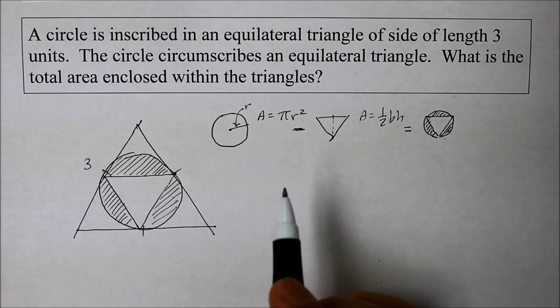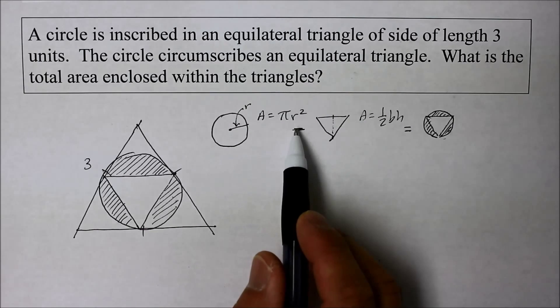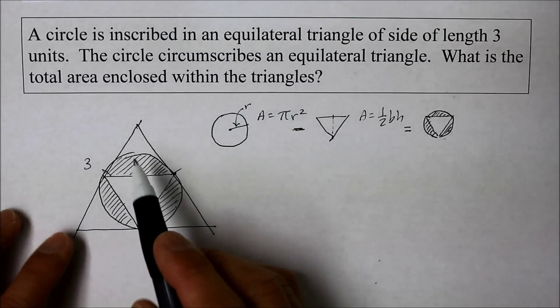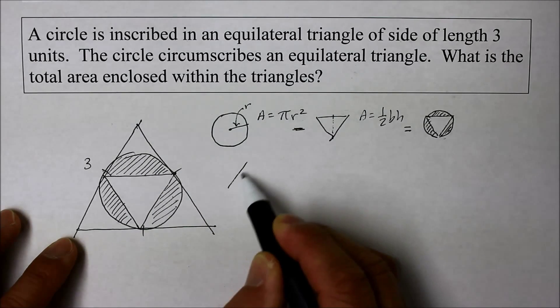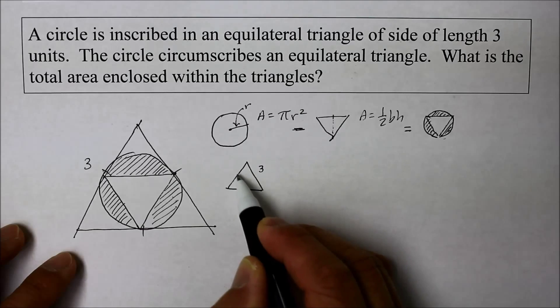All right, then. Let's start looking for the area of a circle and look for the radius. In fact, here's what we know. Let's look at the big triangle. It looks like we have the three equal sides of three.